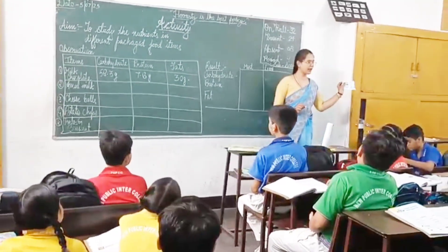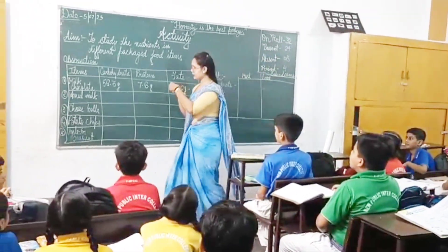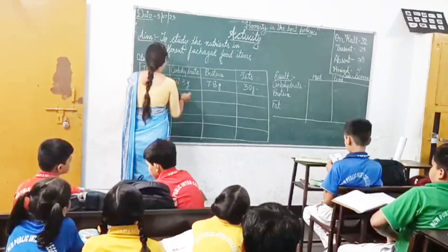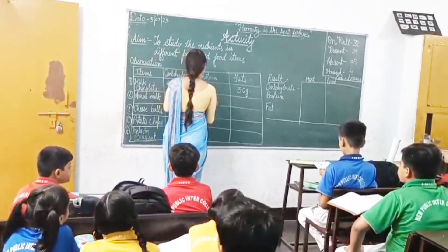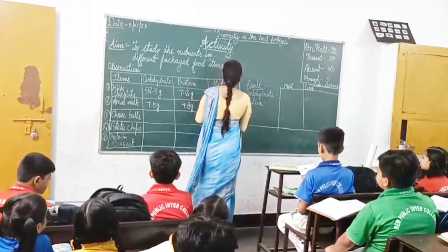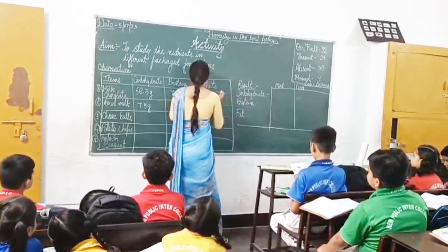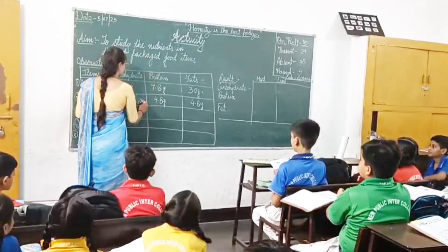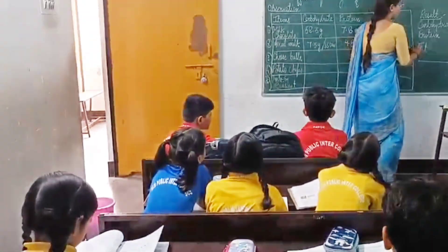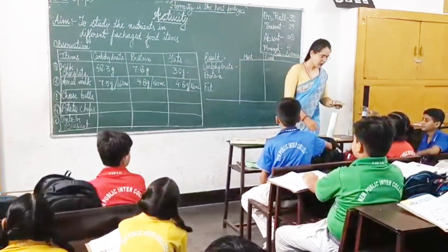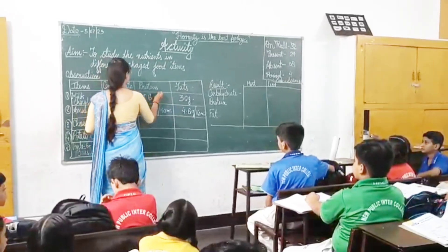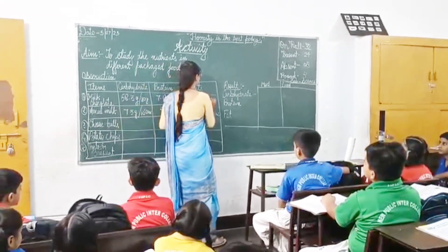Now we come to the milk packet. We have carbohydrate as 7.5 grams, protein as 4.8 grams, and fat content 4.8 grams. This is per 160 ml — the packet contains 160 ml of milk. The other items are per 100 grams.